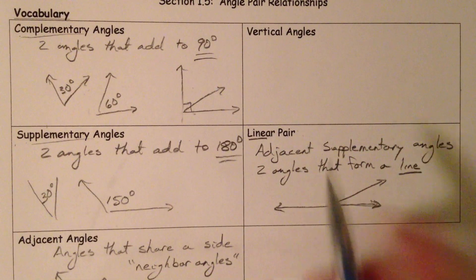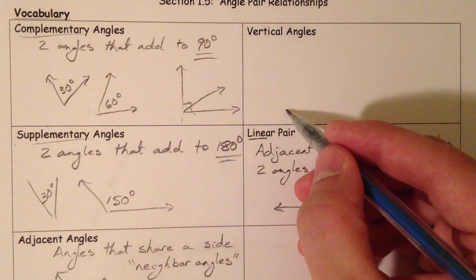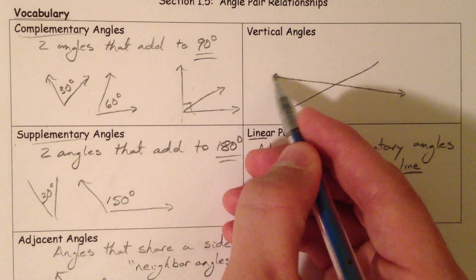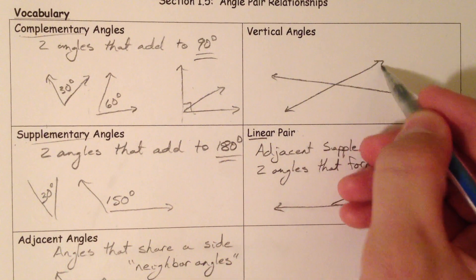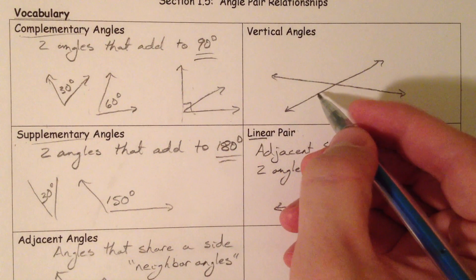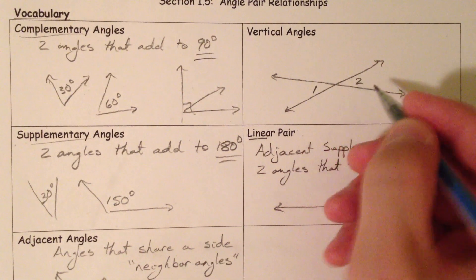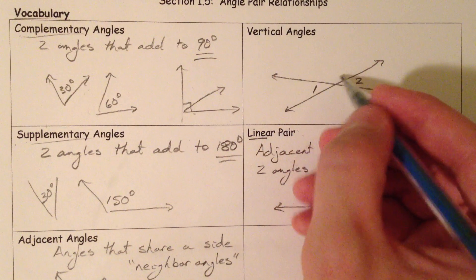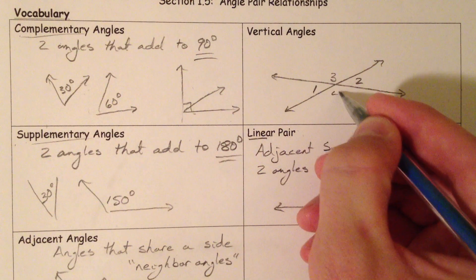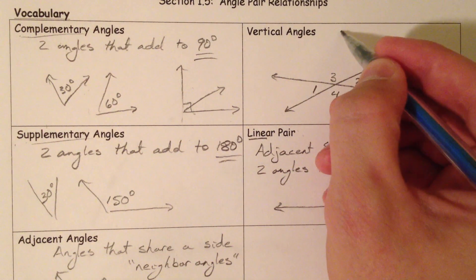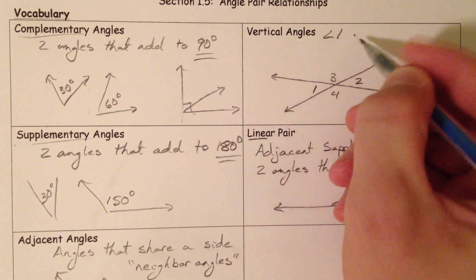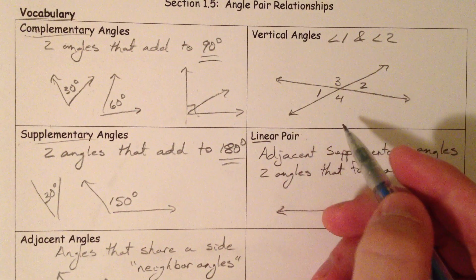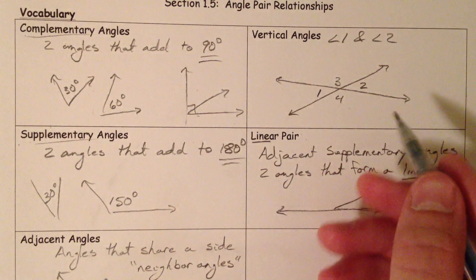And last but not least, vertical angles. When you get two lines that intersect, you get vertical angles. And vertical angles are say one and two, angles that are across from each other like this. And three and four are vertical angles. Angle one and angle two are vertical angles across from each other in intersecting lines.